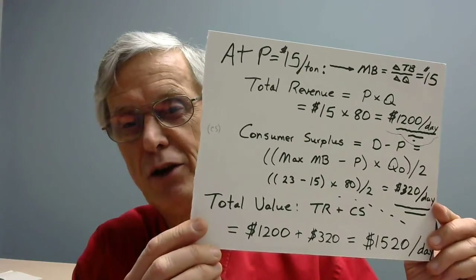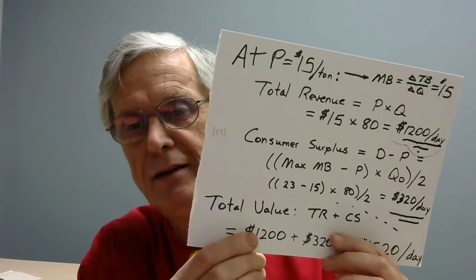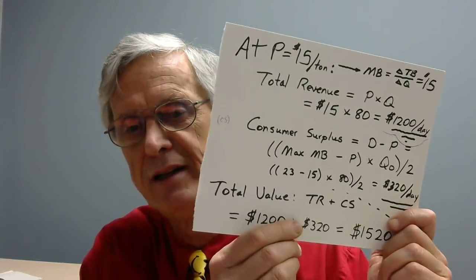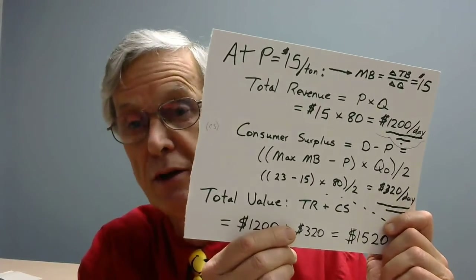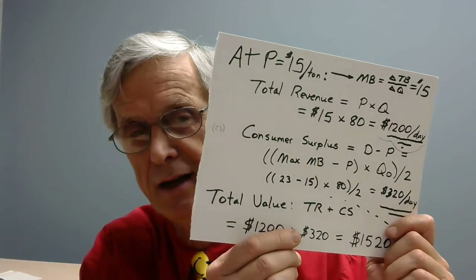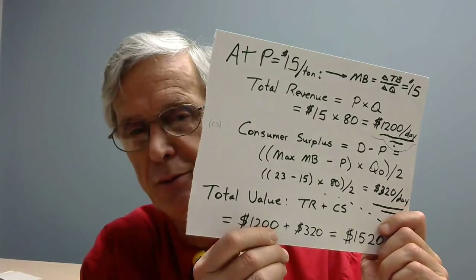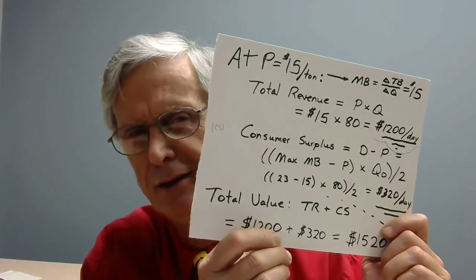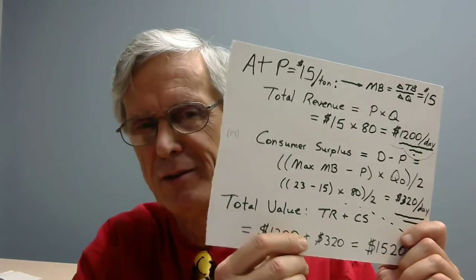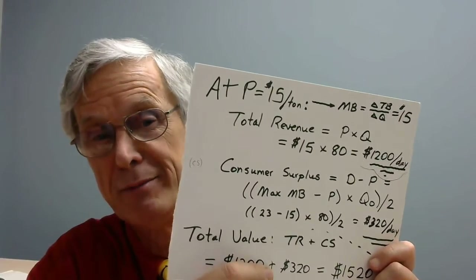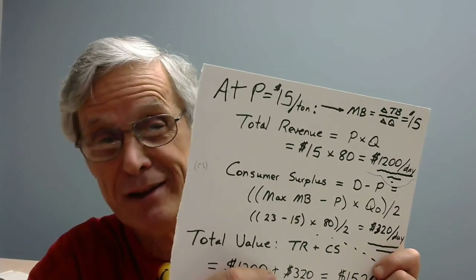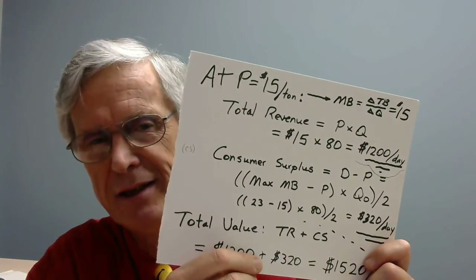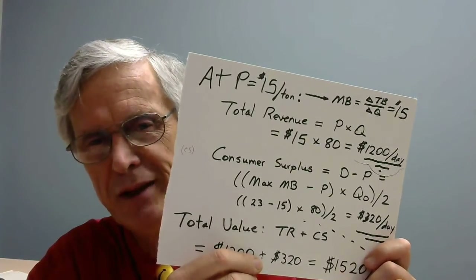Total revenue plus consumer surplus gives you total value when the quantity is 80. So $1,200 plus $320 — the total value is $1,520. Out of that, consumers get $320 and $1,200 goes to the producers who sold it for $15. Out of that the producers hopefully have some profit. The market will drive price down to the minimum profit that'll keep producers from running away — you want them kind of happy, but not too deliriously happy, because that's just a transfer of money from you to them.